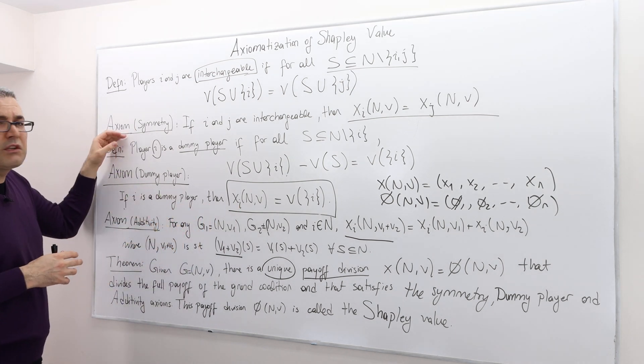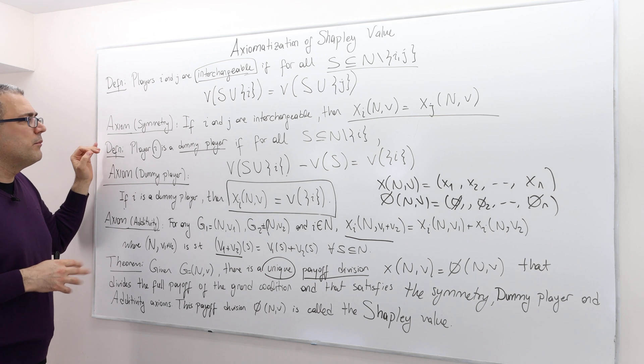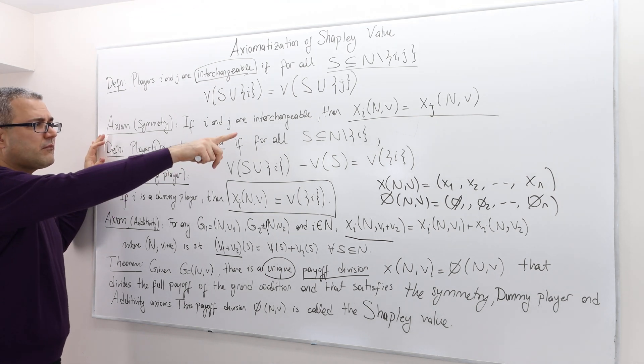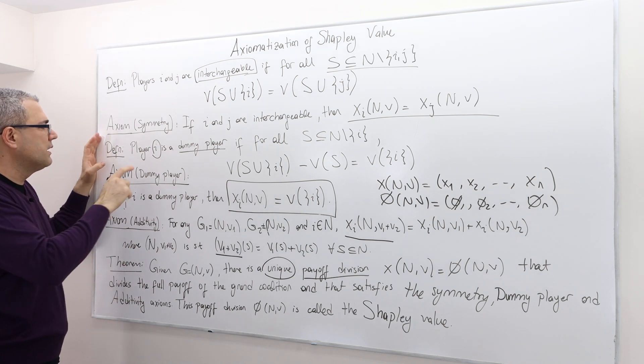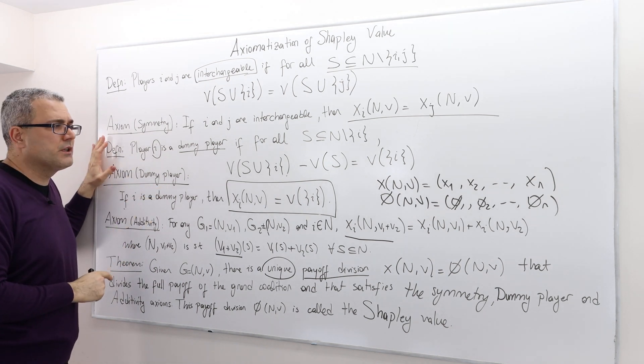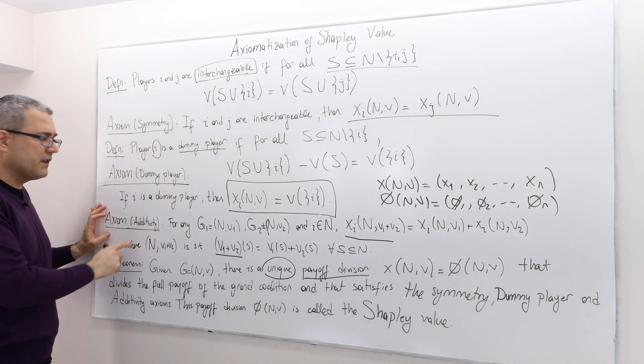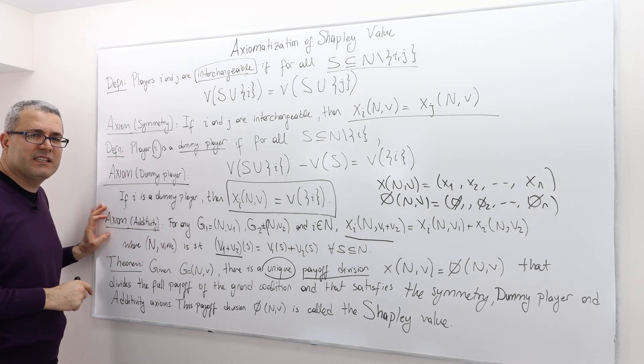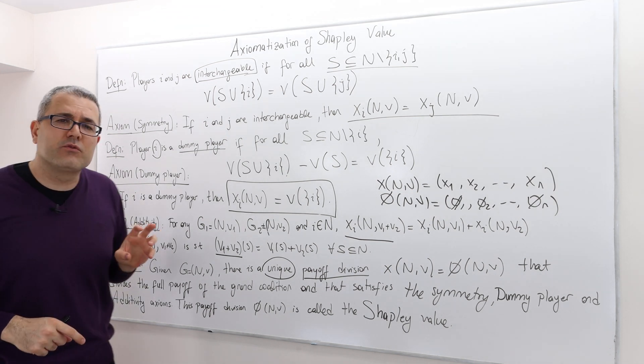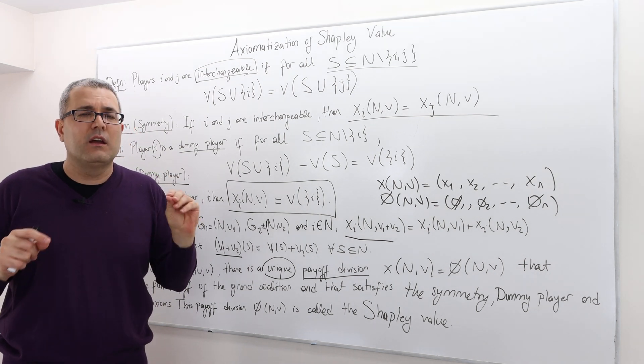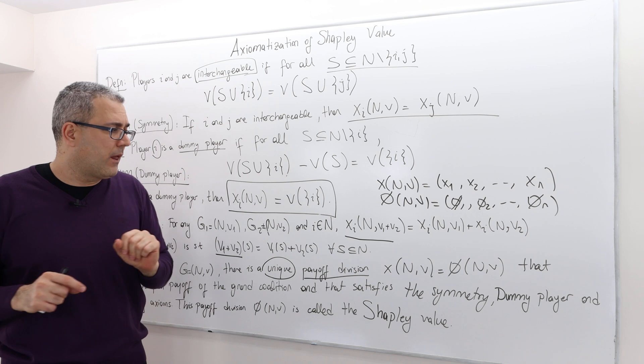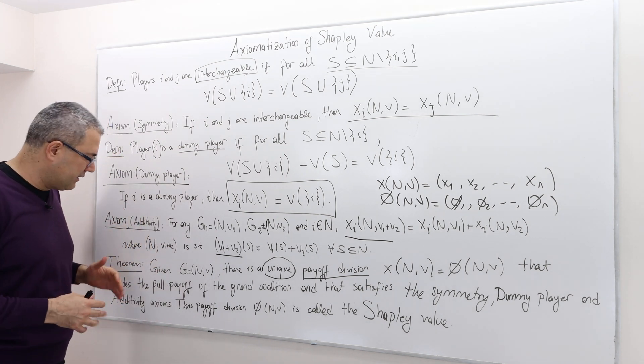Well, then, if you're looking for some division rule, which satisfies symmetry axiom, it treats interchangeable players equally or satisfies dummy player assumption and, or sorry, and satisfies additivity assumption. Well, then this division rule is, it can be only and only Shapley value. Okay. So that's what this theorem says.